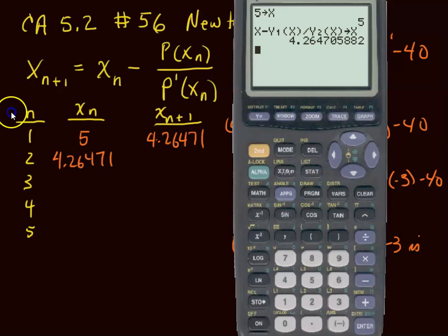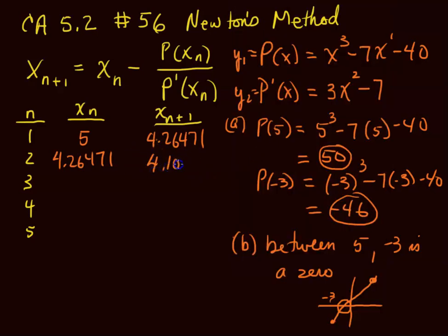Now that has been saved into x. When you just press enter it runs the previous command. So now this x has the 4.26471. When I run it again it gives me a new number: 4.10256.